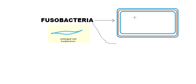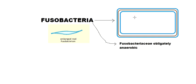Fusobacteria is a phylum which comprises two families: Leptotrichaceae and Fusobacteriaceae. In the family Fusobacteriaceae we find obligately anaerobic organisms, and in the family Leptotrichaceae we find a mixture of obligately anaerobic and aerobic bacteria.